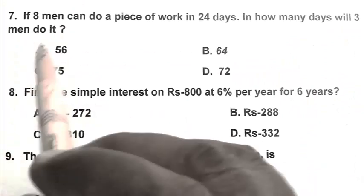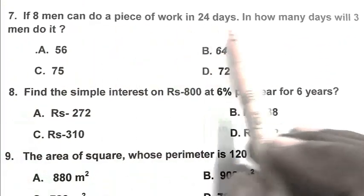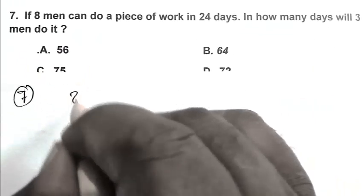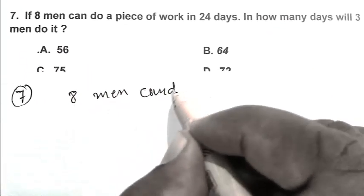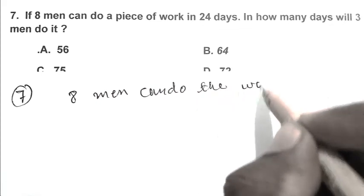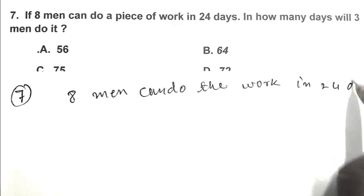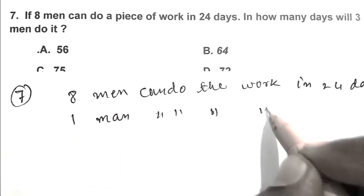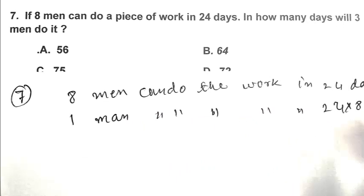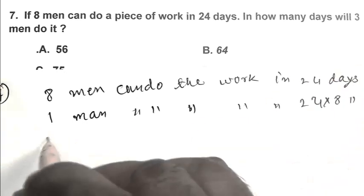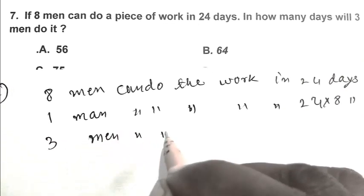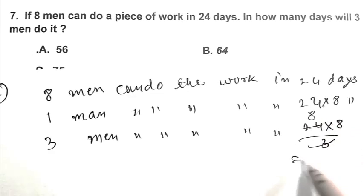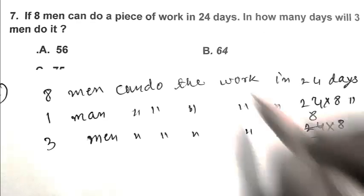Question number 7: If 8 men can do a piece of work in 24 days, in how many days will 3 men do it? 8 men can do the work in 24 days, so 1 man can do it in 24 multiplied by 8 days, and 3 men can do the work in 24 multiplied by 8 upon 3, which equals 64 days. So B is the right answer.